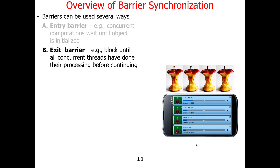You'll be using entry barriers in your next programming assignment to make sure that all the worker threads doing the palantir gazing all start at the same time. So no matter what order the threads are created in, we want them all to hold off until they're all ready to run.